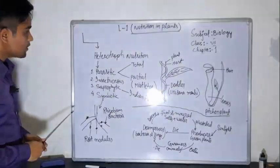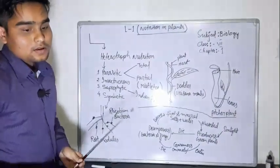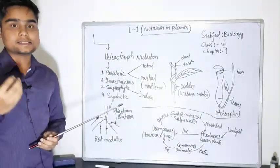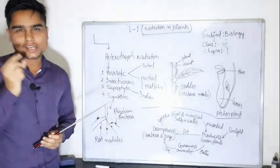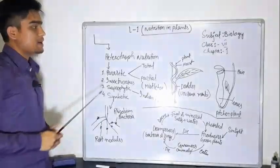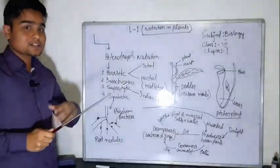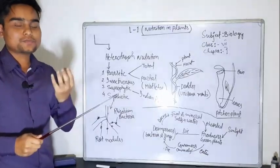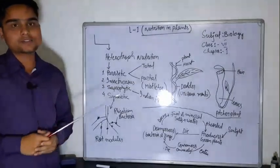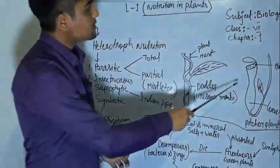This is the example. Insectivorous plants are used in class 4 and class 5, and other plants are used to consume small organisms. There is a small living organism that can be used for food and nutrients, so it can be used as insectivorous plants. In this example, there is a pitcher plant.